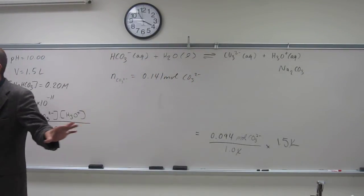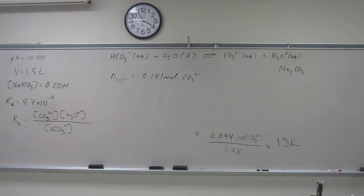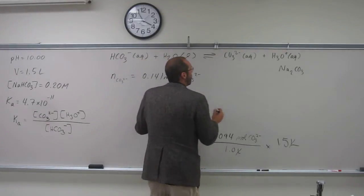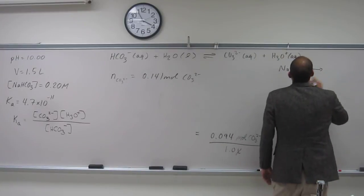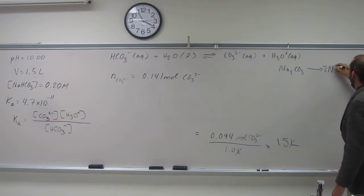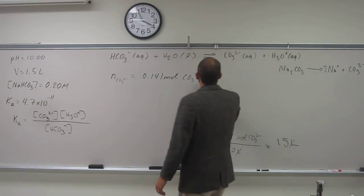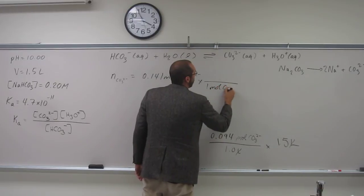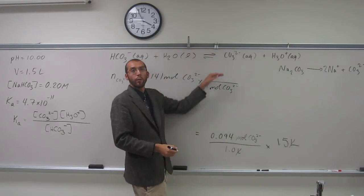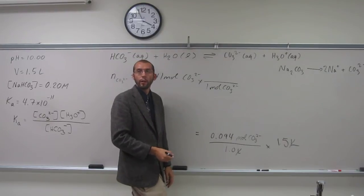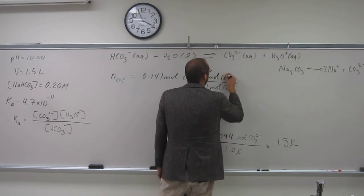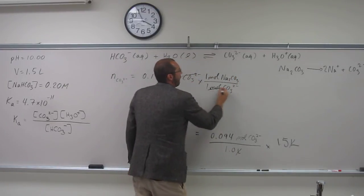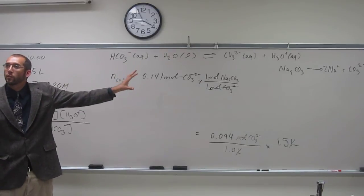But that's moles of CO3 2 minus. We want grams of sodium carbonate. Do you remember this reaction equation? For every 1 mole of carbonate ions, we have 1 mole of sodium carbonate. That gives us moles of sodium carbonate.